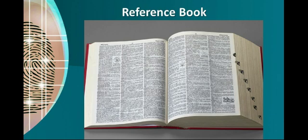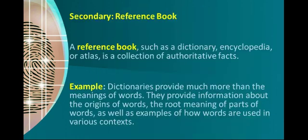Secondary: Reference Book. A reference book, such as a dictionary, encyclopedia, or atlas, is a collection of authoritative facts. Example: Dictionaries provide much more than the meanings of words. They provide information about the origins of words, the root meaning of parts of words, as well as examples of how words are used in various contexts.